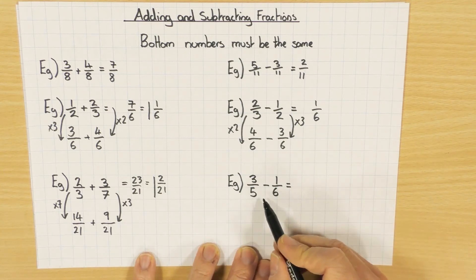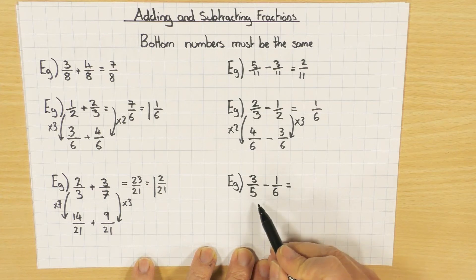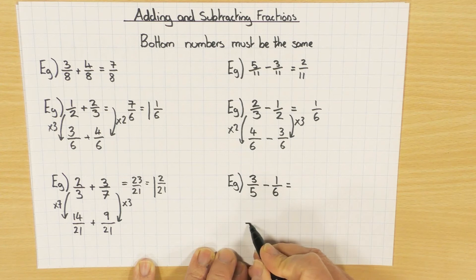And again with the subtraction, it's still the same method. We're looking for a common denominator or a common multiple. A quick way to get a common multiple is five times six, so that's going to be 30. So I put both of my denominators over 30.